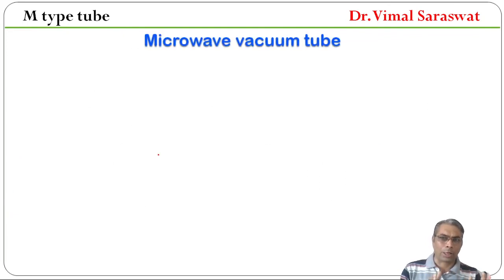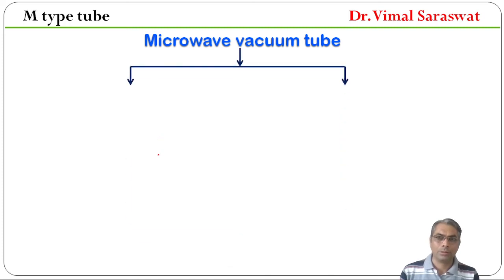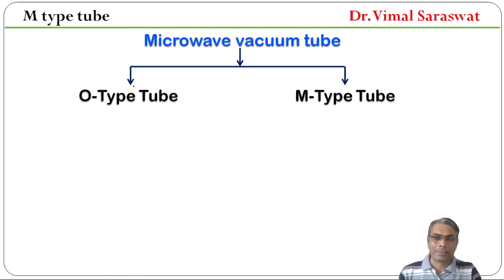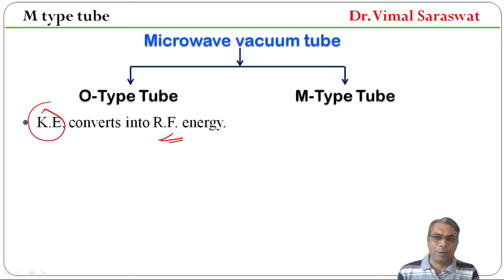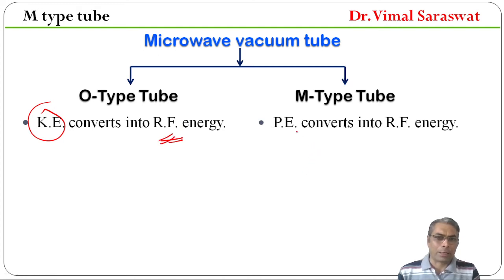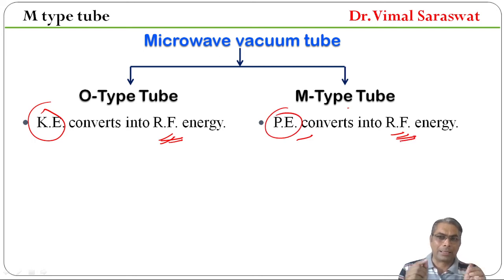Now, microwave vacuum tubes are of two types: O-Type tube and M-Type tube. In O-Type tube, kinetic energy converts into radio frequency energy. O-Type tube में हमारी kinetic energy, radio frequency energy में convert होती है. And in M-Type tube, potential energy converts into radio frequency energy. M-Type tube में potential energy, radio frequency energy में convert होती है.